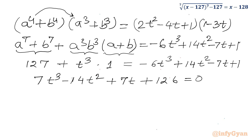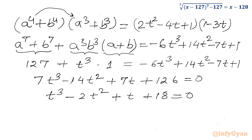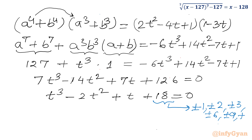The equation is divisible by 7, so dividing gives t cube minus 2t square plus t plus 18 equals 0. Let us use the Rational Root Theorem. The factors of the constant term 18 are plus or minus 1, plus or minus 2, plus or minus 3, plus or minus 6, plus or minus 9, and plus or minus 18.